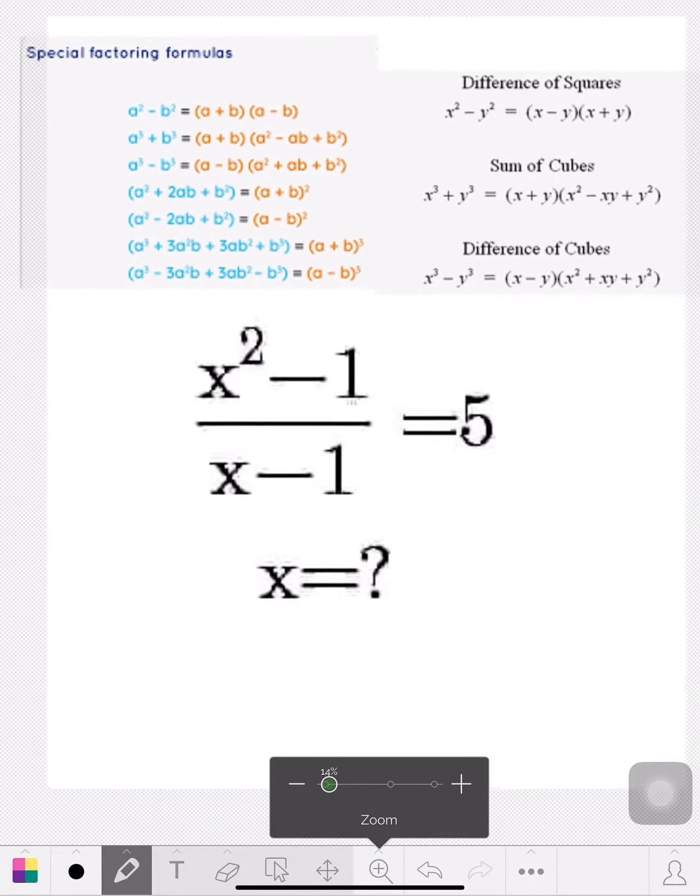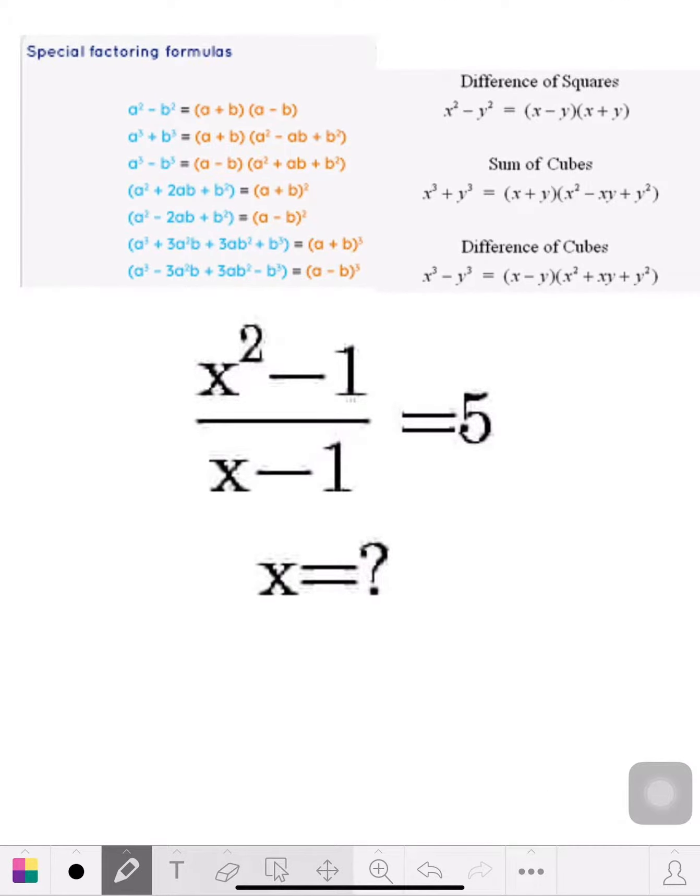Well, what I did above, I put on a couple of special factoring formulas just so you can familiarize yourself with them. The one I feel that kind of fits with this one is the top one here: a square minus b square equals a plus b times a minus b.